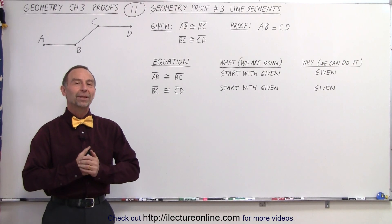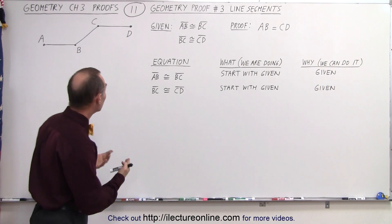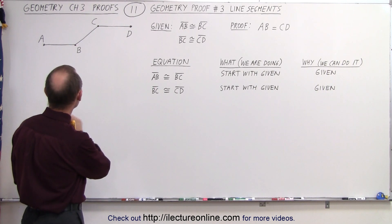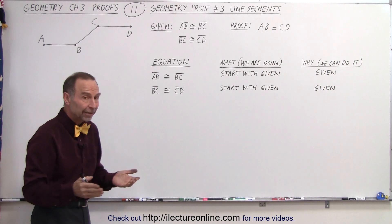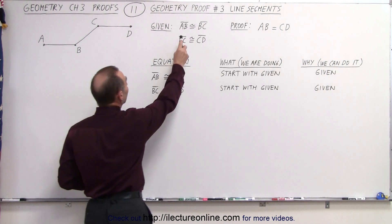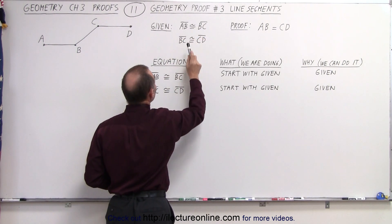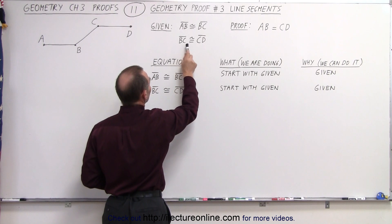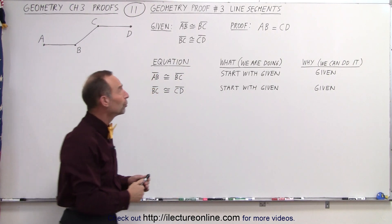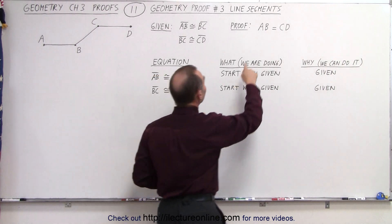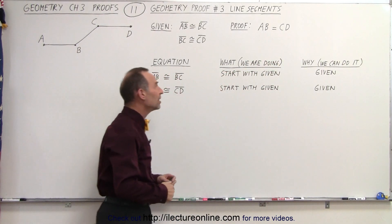Welcome to iLecterOnline. Our next proof comes with using three segments: AB, BC, and CD. We're given that line segment AB is congruent to line segment BC, and line segment BC is congruent to line segment CD, and we're supposed to prove that the length of segment AB is equal to the length of segment CD.